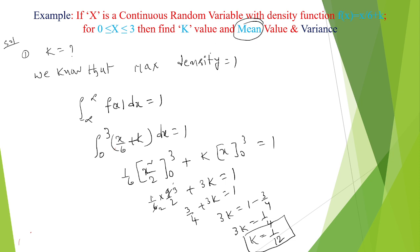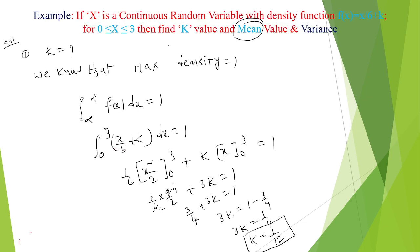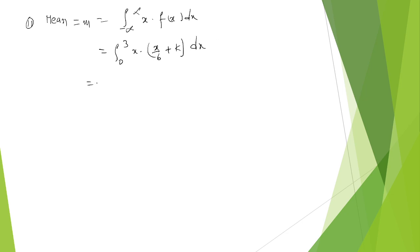With k completed, we calculate the mean. The mean formula is m = E(x) = integral from minus infinite to plus infinite of x times f(x) dx. With limits 0 to 3, we compute the integral from 0 to 3 of x times (x/6 + k) dx. This gives (1/6) times x³/3 evaluated from 0 to 3, plus k (which is 1/12) times x²/2 evaluated from 0 to 3.